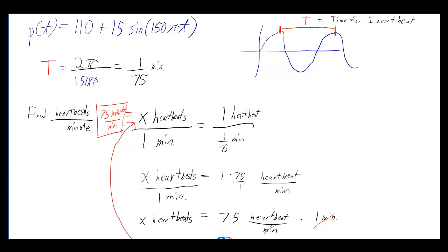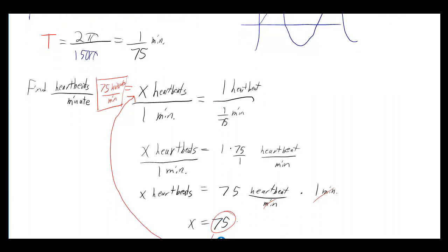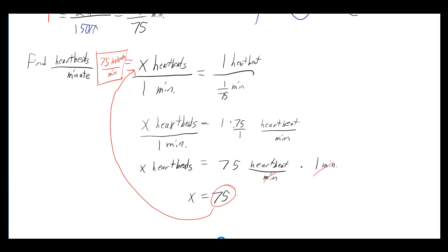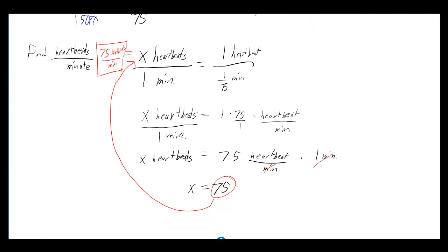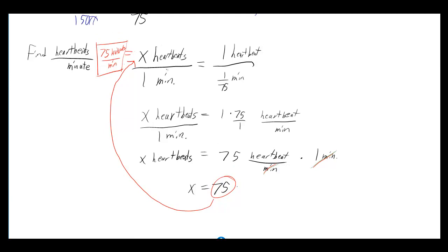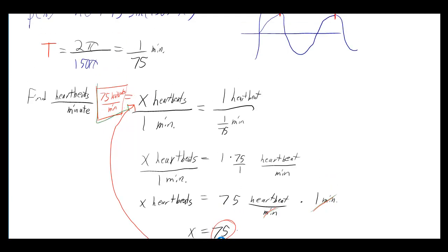So then you just go through and solve the proportion, and you can change it from 1 divided by 1 over 75 to 1 times 75 over 1. And then you can multiply both sides by the 1 minute, so that way you can see that the units cancel out right there and there. So you get x equals 75, so that's 75 heartbeats per minute. That's our final answer right there.